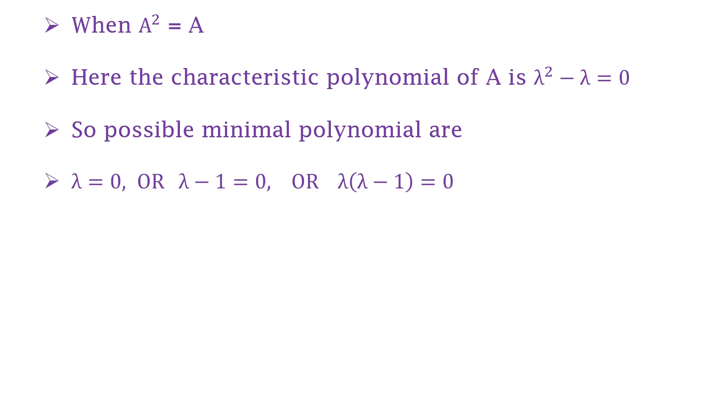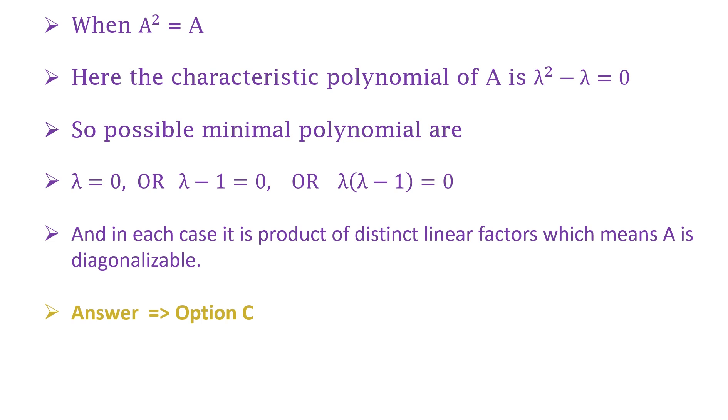So the possible minimal polynomials are λ = 0, or λ - 1 = 0, or λ(λ - 1) = 0. And here in each case it is a product of distinct linear factors, which means that A is diagonalizable. Therefore the correct answer is option C. Thank you.